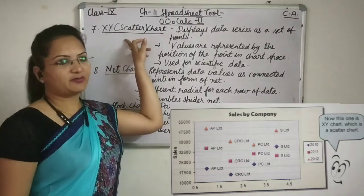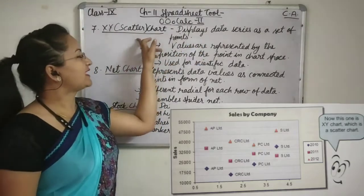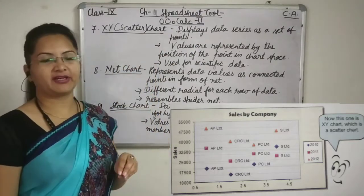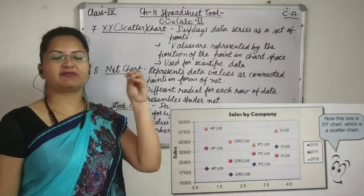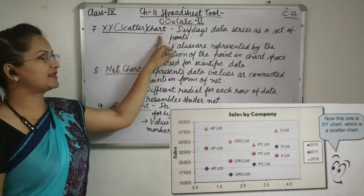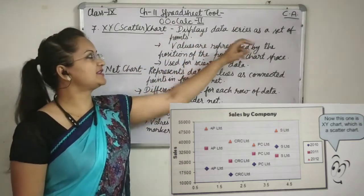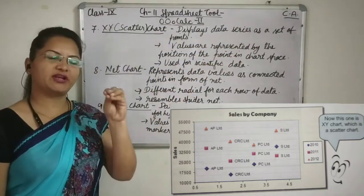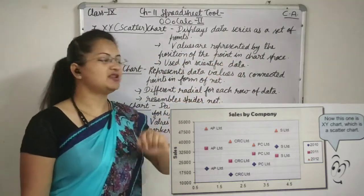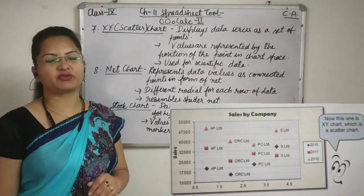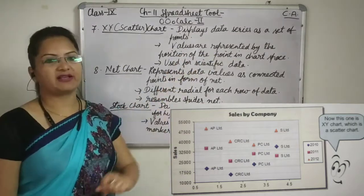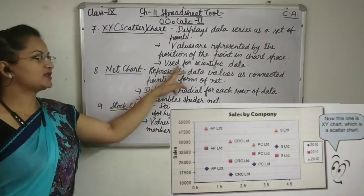Now XY scatter chart. As the name suggests, the points are scattered on the graph — meaning XY coordinates will be plotted on the graph. It seems like scatter points on the graph, so it is a scatter chart. It displays data series as a set of points and values are represented by the position of the point in chart space. It is used for scientific data.